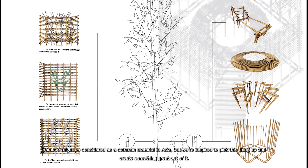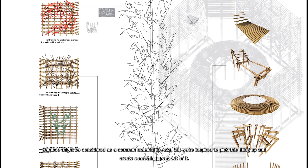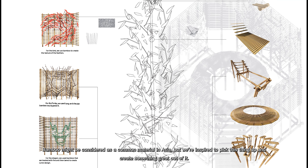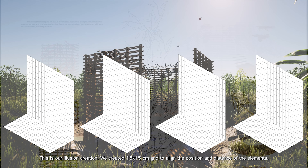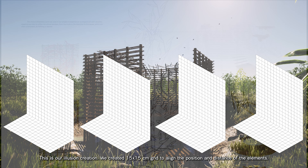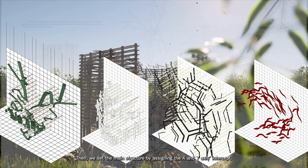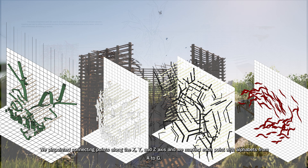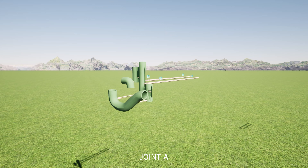Bamboo might be considered a common, cheap material in Asia, but we are inspired to pick these simple things and create something great out of it. For our illusion creation, we created a 15 by 15 grid to align the position and distance of each element. Then we set the main structure by assigning the X and Y axis intercepts. We pinpoint connecting joints along the X, Y, and Z axis, marking each joint with an alphabet from A to G.